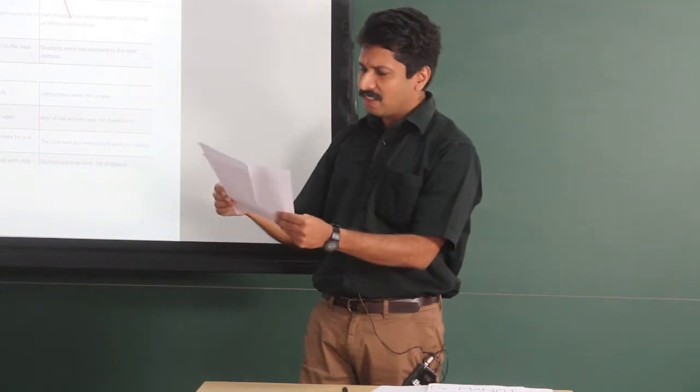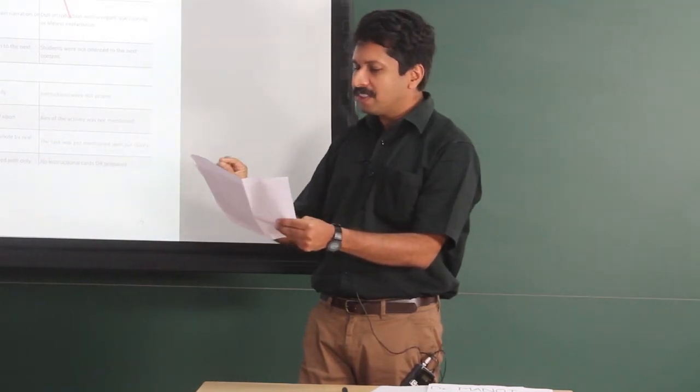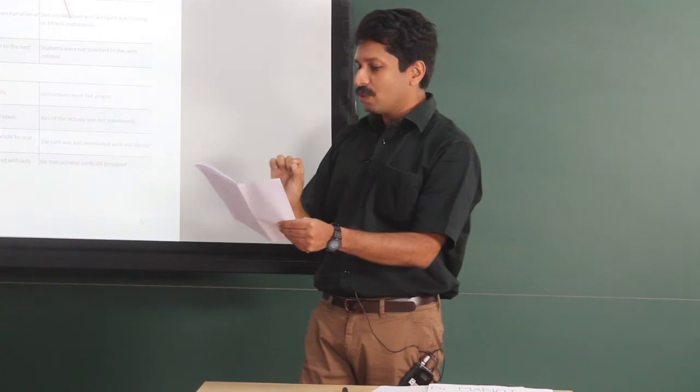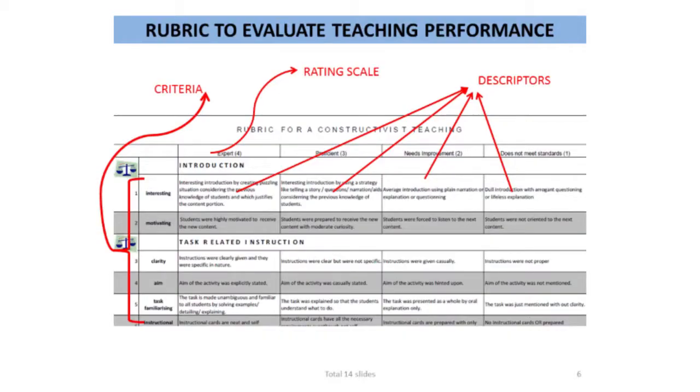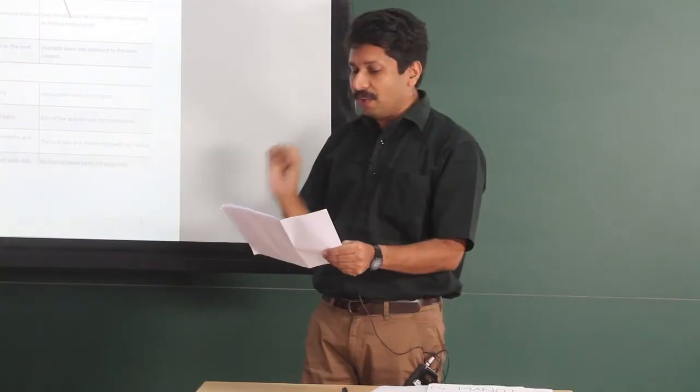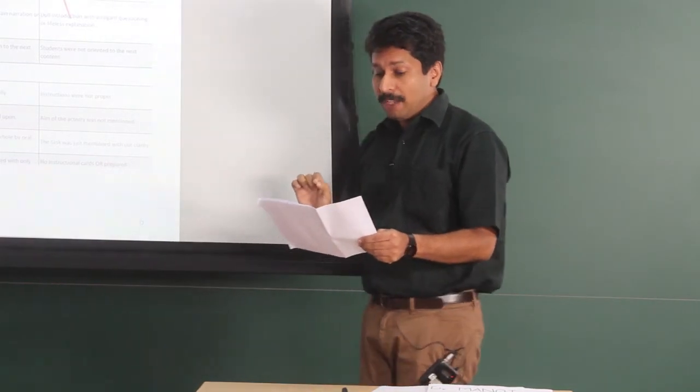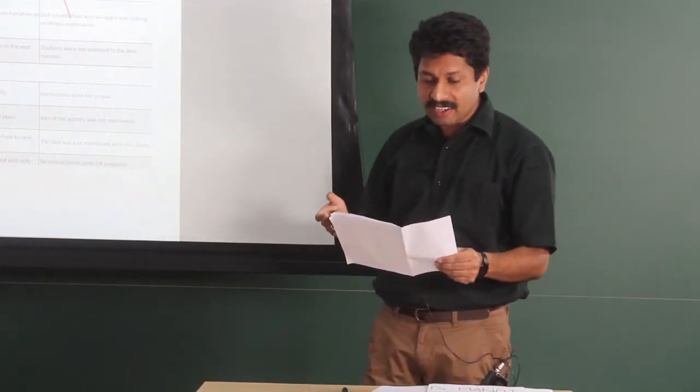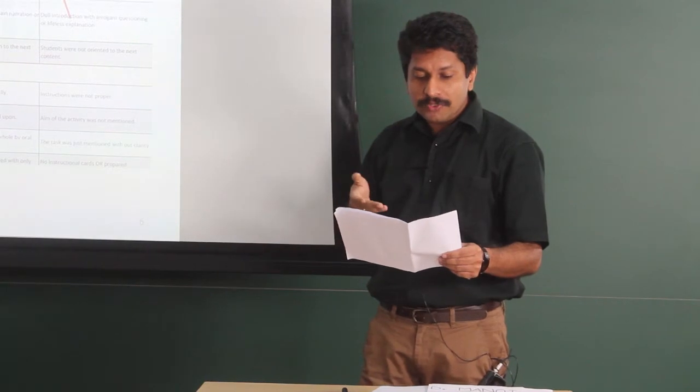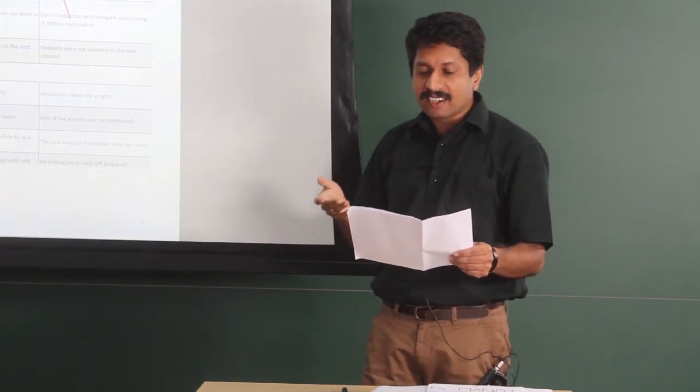If you can just glance through the first row, the first row reads interesting. A constructivist class should be interesting at the stage of introduction. The first cell reads that the interesting introduction should be by creating puzzling situation, considering the previous knowledge of students and which justifies the content portion.